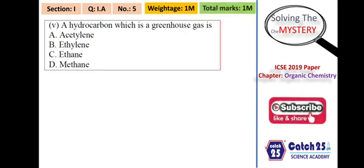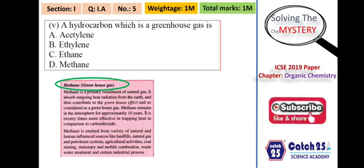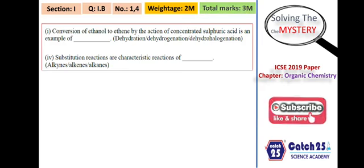The first question asked in the 2019 paper from organic chemistry was question number 1A, question number 5, with a weightage of one mark. The question was: which hydrocarbon is a greenhouse gas? This is a very typical question asked in every board — CBSE, ICSE, SSC. As you can see from the textbook screenshot, methane is the component of greenhouse gas.